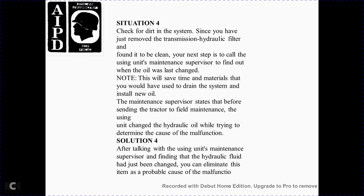Figure 60 shows the transmission hydraulic system filter. Situation 4: Check the filter for dirt in the system. Since you just removed the transmission hydraulic filter and found it dirty, the next step is to contact the maintenance supervisor to find out when the oil was last changed. Note: this will save time and materials if you have to drain the system and add new oil. The maintenance supervisor will determine if a failed oil change schedule, using the unit's maintenance records and hydraulic oil triangle, is the cause of the malfunction. Solution 4: After talking to the unit maintenance supervisor, you find that the hydraulic fluid had not been changed as scheduled, eliminating this item as the probable cause of the malfunction.